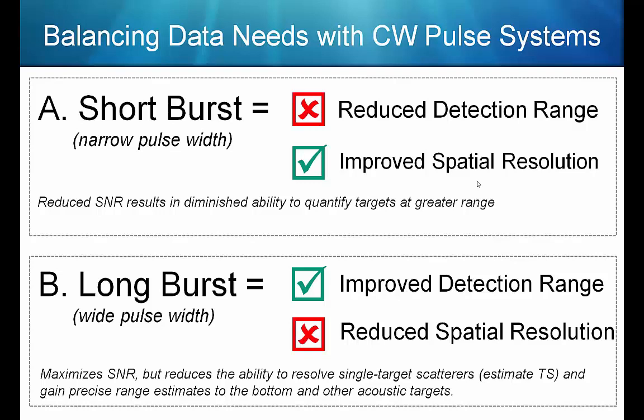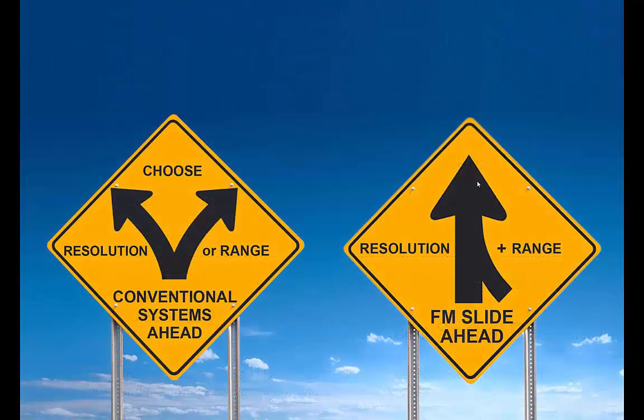As a review: a short or narrow pulse width gives reduced detection range but improved spatial resolution in a CW system, and a long or wide pulse width signal gives improved detection range but reduced spatial resolution. So there is a choice to be made with CW pulses between resolution or range. However, the technique of FM slide allows for increased resolution and range over CW systems.